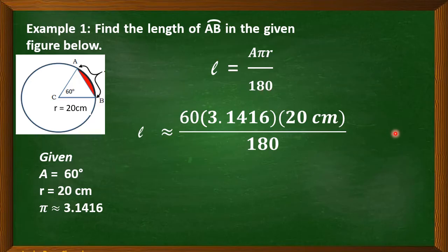Then, copy the denominator which is 180. Now, we have to multiply. 60 times 3.1416 times 20 cm. That is equal to 3769.92 cm.